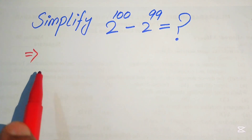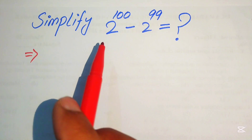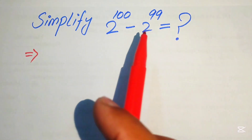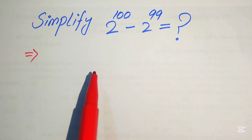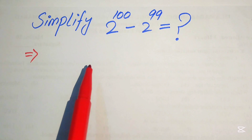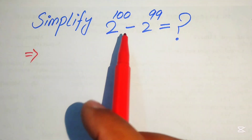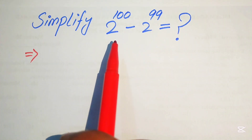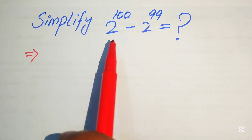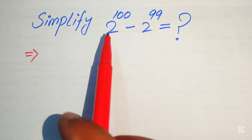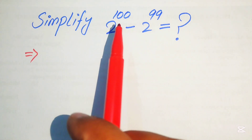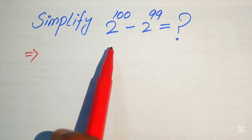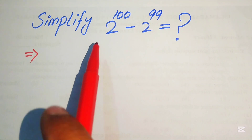The very first step we are going to do: there is no rule in which you subtract this type of expression directly. You can see that the bases on both of these terms are the same, but the exponents are different. So we cannot apply any rule in which the same base but different exponents are subtracted from each other.